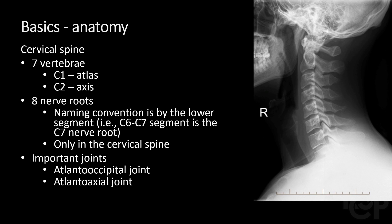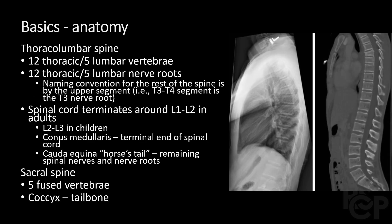These joints have important implications, especially in traumatic subluxation or dissociation. Unlike in the cervical spine, the thoracic and lumbar spines both have equal numbers of vertebrae and nerve roots — 12 and 5 respectively. Here onwards the naming convention differs; for example, between T3 and T4, the T3 nerve root comes out.